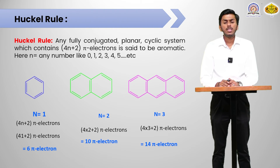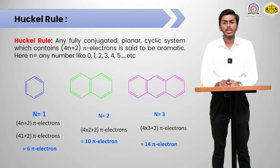Now we will discuss the important rule of aromaticity — Hückel's rule. Hückel's rule states that any fully conjugated planar cyclic system containing 4n+2 pi electrons is said to be aromatic in nature, where n is a number such as 0, 1, 2, 3, 4, 5, etc.